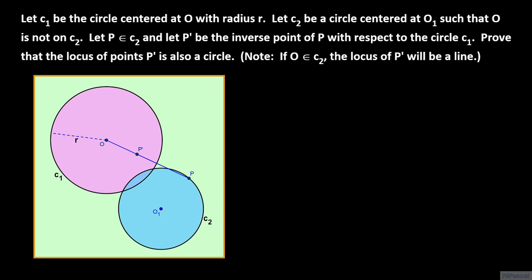What does it mean precisely for two points P and P prime to be inverses with respect to a circle C sub 1? Two points P and P prime are inverses with respect to C sub 1 if the product of the distances of P and P prime to the center O is equal to the square of the radius of C sub 1. Therefore, we have OP times OP prime equals R squared.